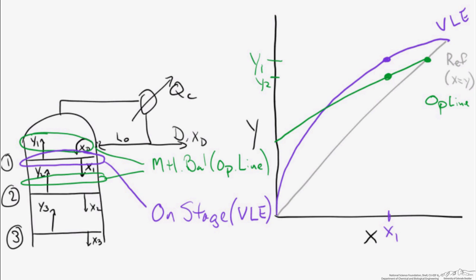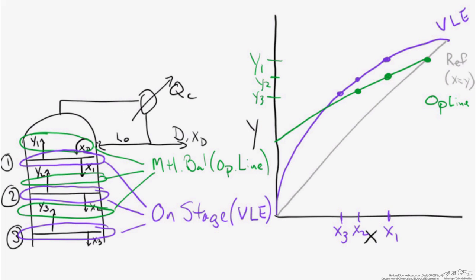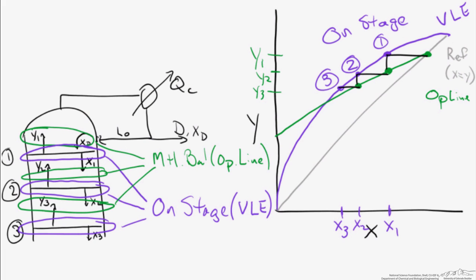If we continue, we take the y2 composition and use that to define the liquid leaving stage 2, then continue downward through the column making the same overall process. When we're on a stage, we're using VLE to define the compositions by looking at points we've intersected the vapor-liquid equilibrium line. If we connect the places we've been as we move down this column with straight lines, we see that we move left and down — what's referred to as stepping off these stages — to figure out what the compositions are throughout the entire column.